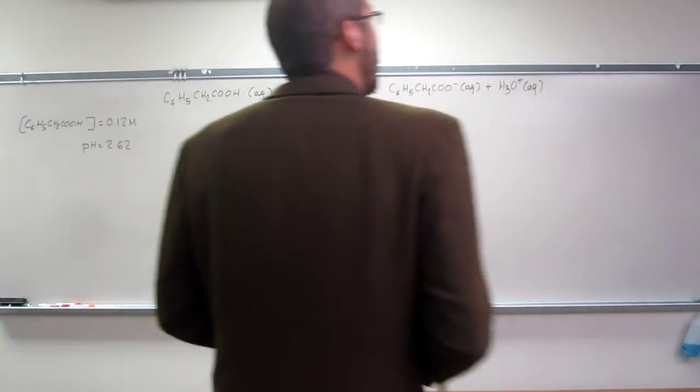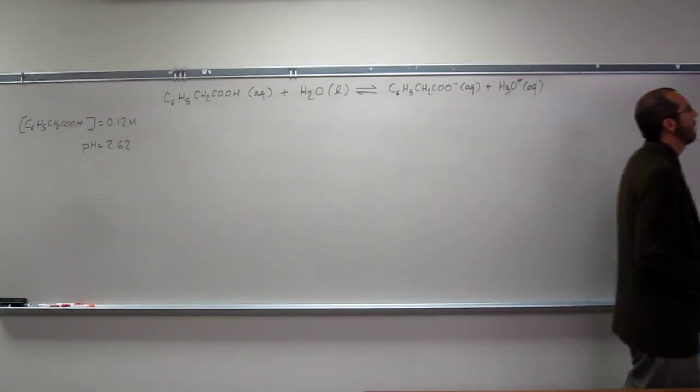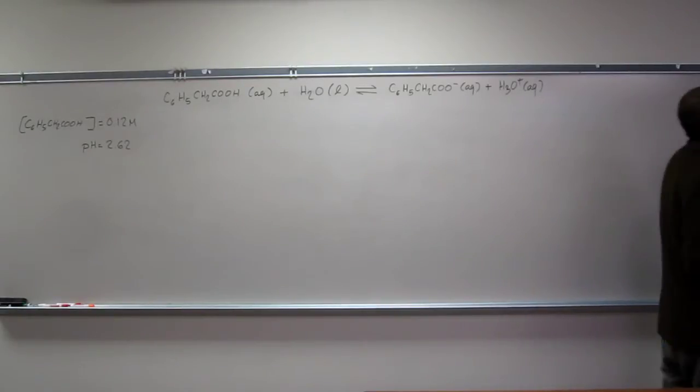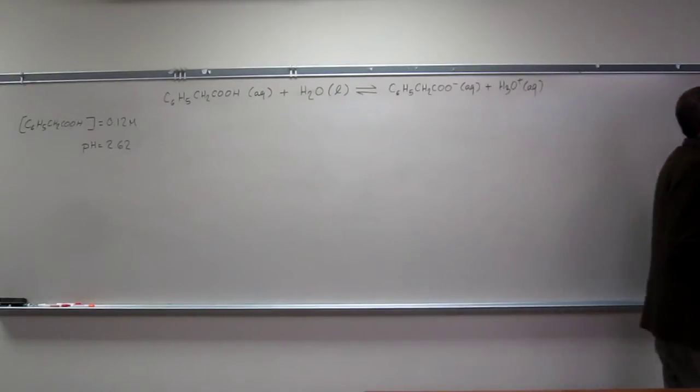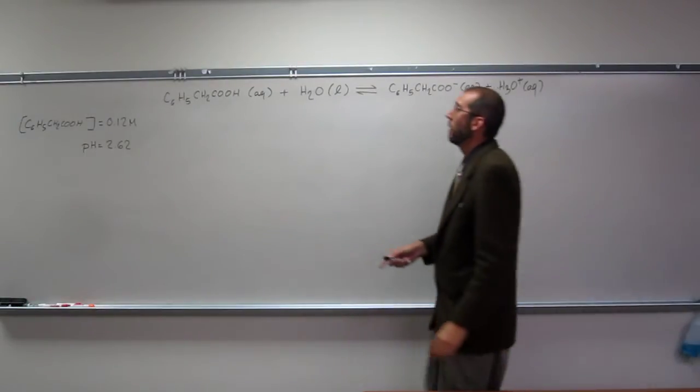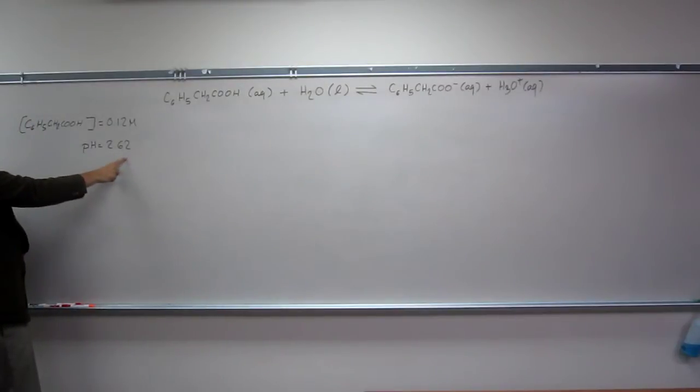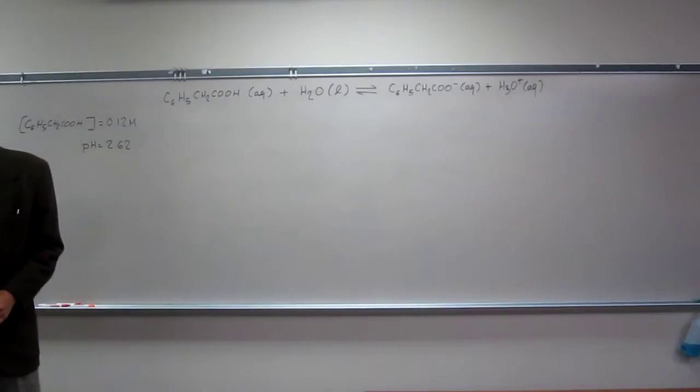Let's read what the problem says. It says phenylacetic acid, which is this thing here, and they give you the structure, builds up in the blood of a person with phenylketonuria. It's an inherited disorder that, if untreated, causes mental retardation and death. A study of the acid shows that the pH of a 0.12 molar solution is 2.62. What is the Ka of phenylacetic acid?